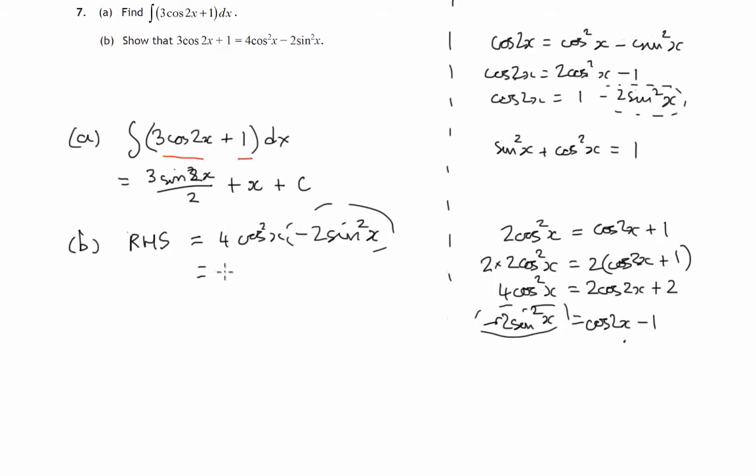So the minus 2sin²x here can get replaced by cos2x minus one. So let's do all these replacements. Four cos²x is identical to 2cos2x plus 2, and the minus 2sin²x is the same as cos2x minus one.